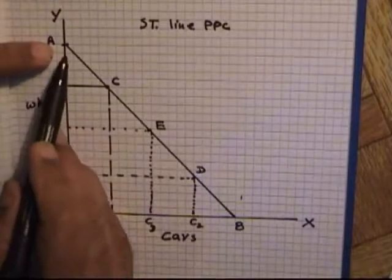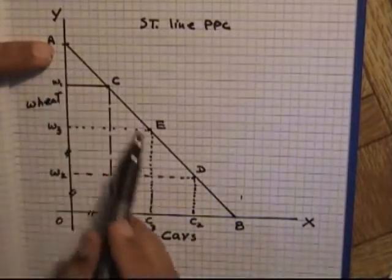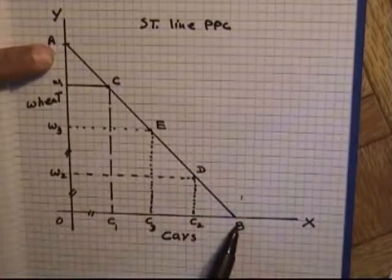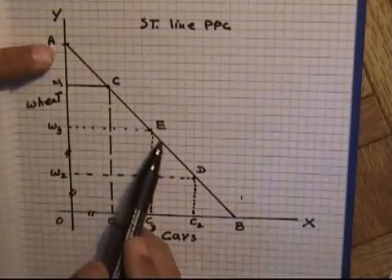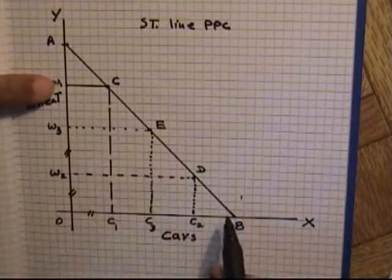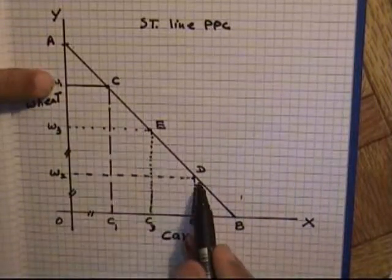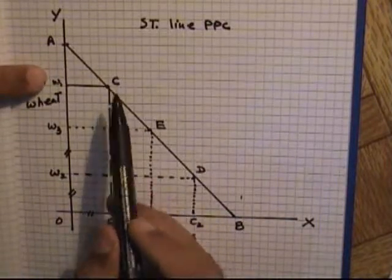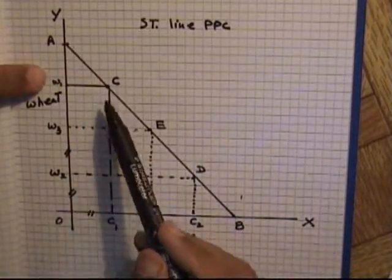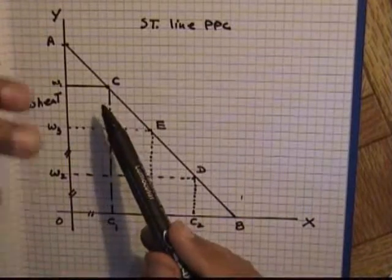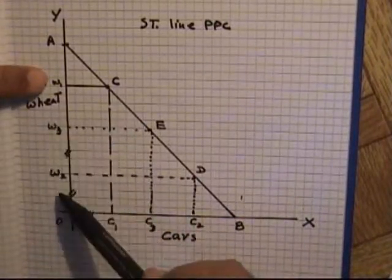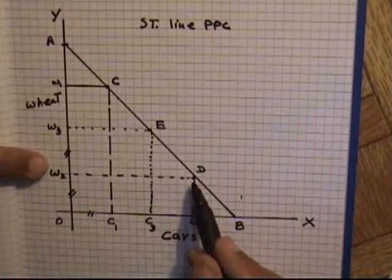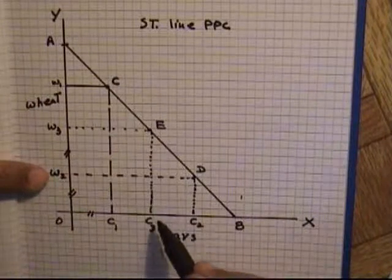Keeping production on this line — at points A, B, C, D, or E — all provide different production possibilities in the country. At point C, most resources are engaged in the primary sector, which is the production of wheat. At point D, most resources are engaged in the secondary sector, which is the production of cars.